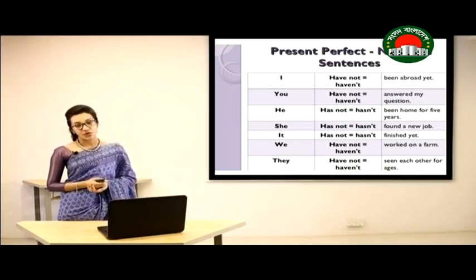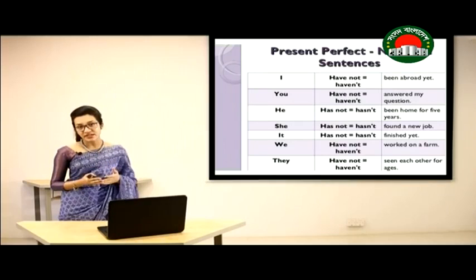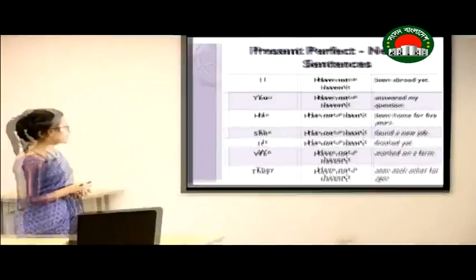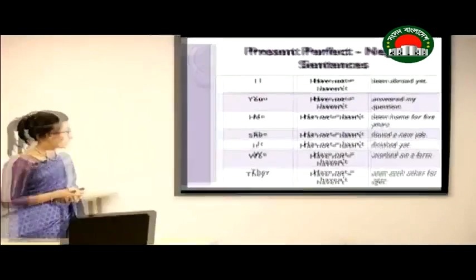The negative structure of Present Perfect Tense is similar to the affirmative — we simply add 'not' after have or has. For example: 'I haven't been abroad yet,' 'You haven't answered my question,' 'He hasn't been home for five years,' 'She hasn't found a new job,' 'It has not finished yet,' 'We have not worked on a firm,' 'They have not seen each other for ages.'